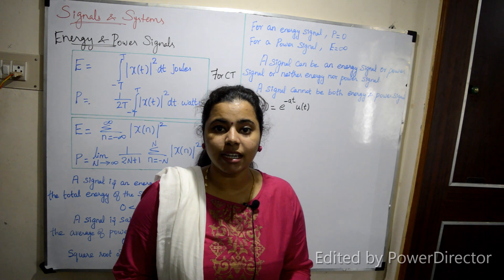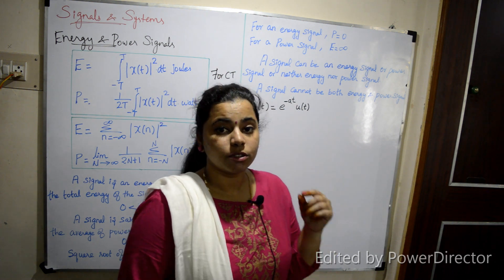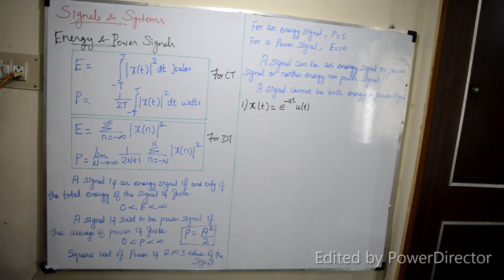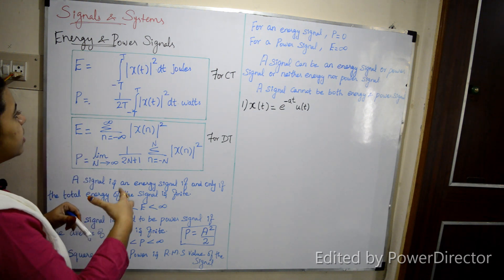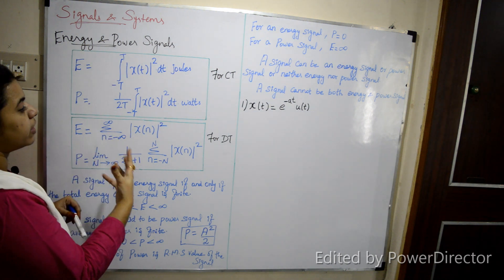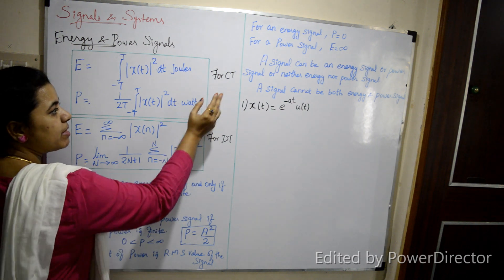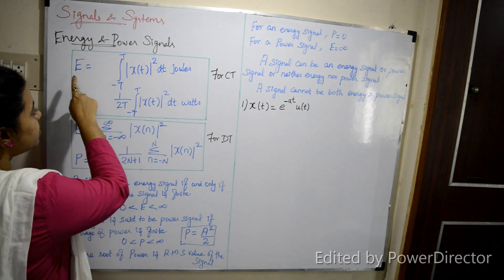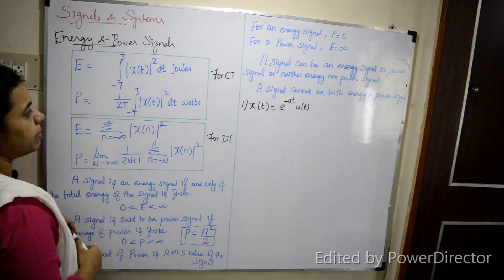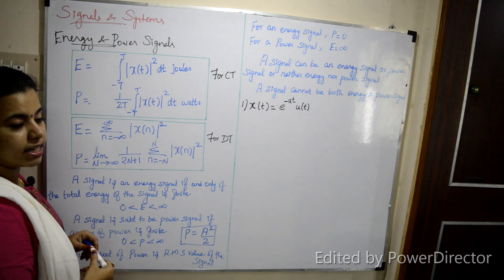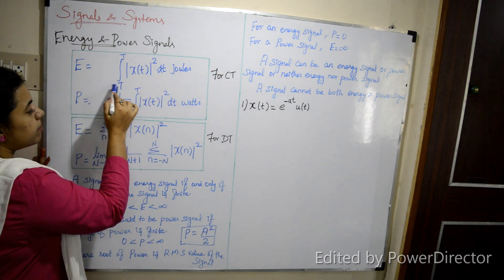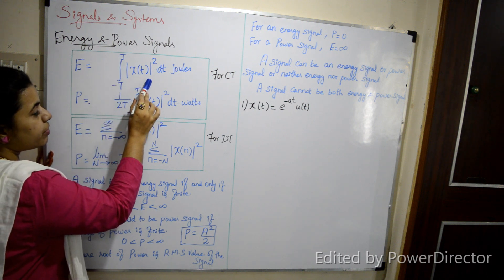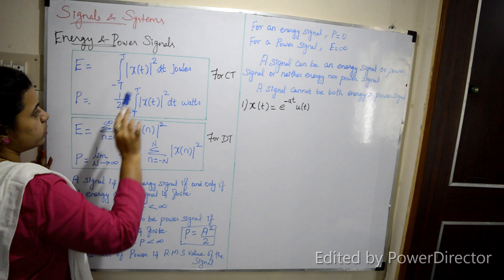Classifications of signals — we will discuss the formulas for energy and power signals. First, energy is defined for a continuous signal by the formula: E = integral from minus T to T of |x(t)|² dt, in joules.